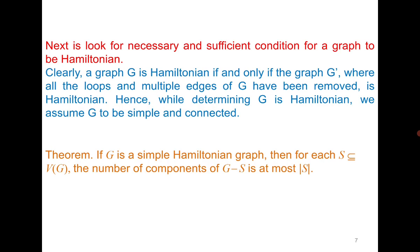The first theorem says that if G is a simple Hamiltonian graph, then for each subset S of the vertex set, the number of components of G minus S — where G minus S means you delete all the vertices that belong to set S — is at most the cardinality of set S.